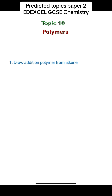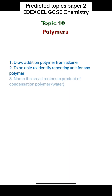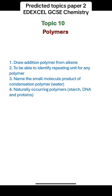Polymers. You should be able to draw the addition polymer from an alkene and identify the repeating unit for any polymer. You should be able to name the small molecule product of condensation polymerisation, which is water, and you should know that naturally occurring polymers include starch (with a repeating unit of sugars), DNA (with a repeating unit of nucleotides), and proteins (with a repeating unit of amino acids). You should also be able to draw the condensation polymerisation product or deduce the structure of the monomers used.